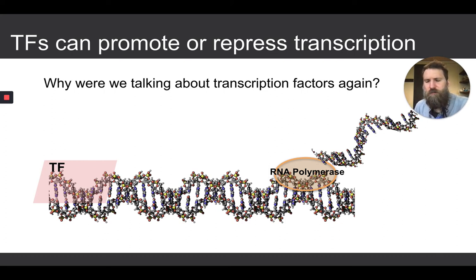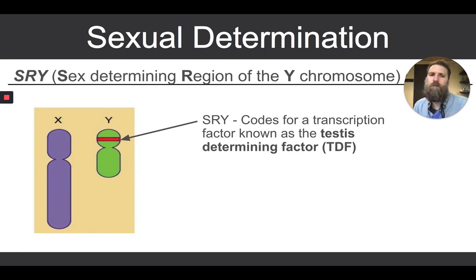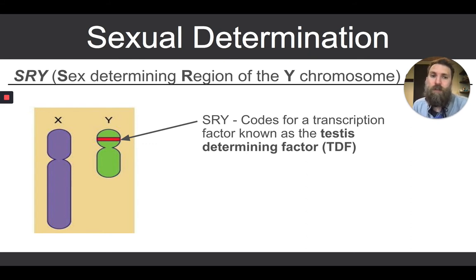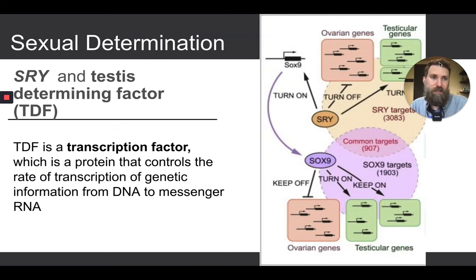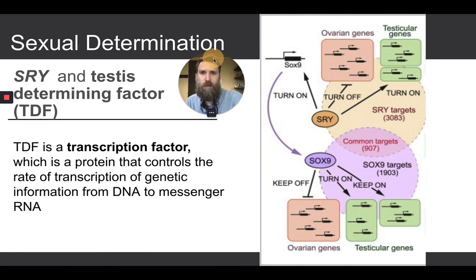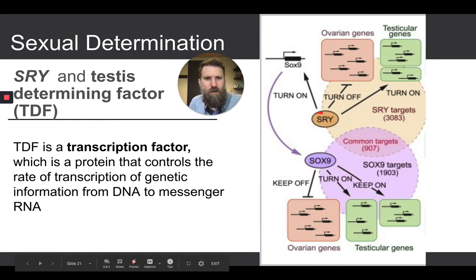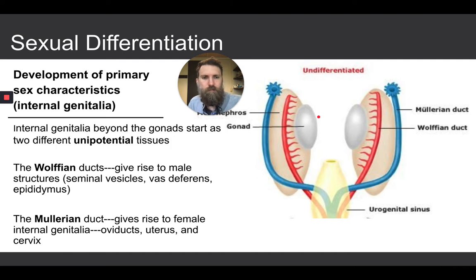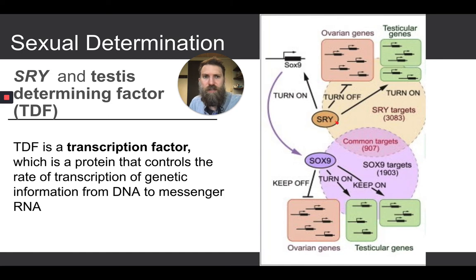So why were we talking about transcription factors? Because the SRY gene codes for a transcription factor called the testes determining factor. Testes determining — it probably has something to do with development of the testes. Indeed it does. The testes determining factor has over 3,000 targets, meaning this transcription factor from the SRY gene can bind to 3,000 different places along the genome — other chromosomes, other genes.